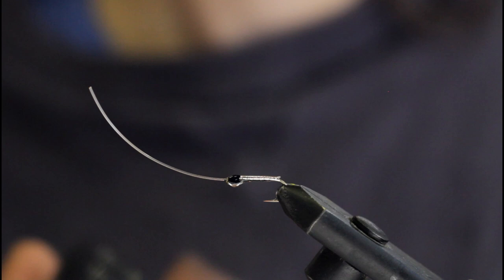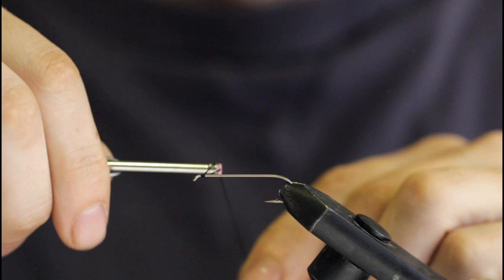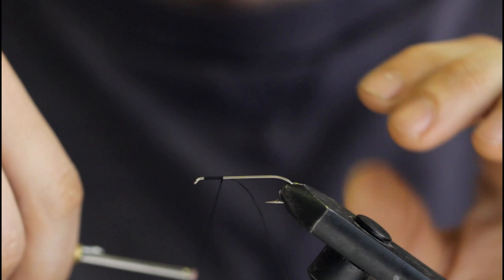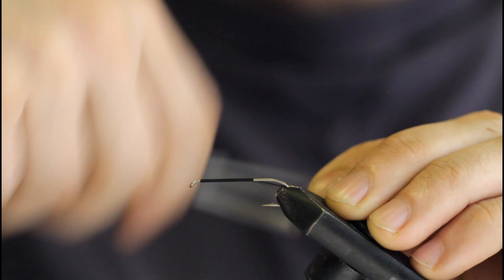Now I'm going to take it out of the vise and grab my size 8 streamer hook. Start my 210 black thread at the hook eye and stop about the same point, the barb of the hook or somewhere in between the point and the barb.